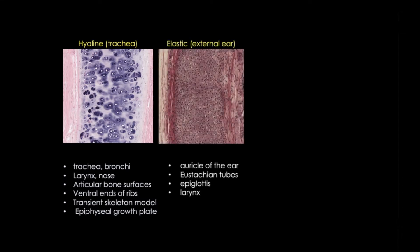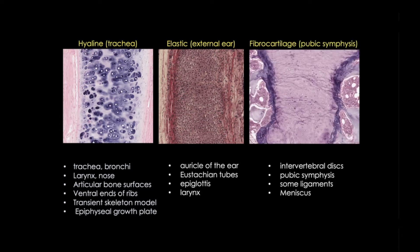Elastic cartilage is found in the auricle of the ear, as shown here, the walls of the external auditory canals, the auditory or eustachian tube, the epiglottis, and some laryngeal cartilages. Fibrocartilage is located in the intervertebral discs, the pubic symphysis, and attachments of certain ligaments.